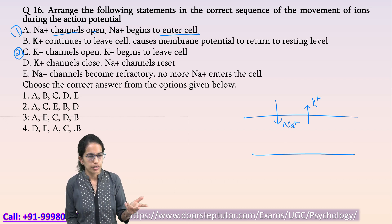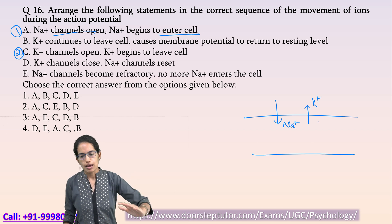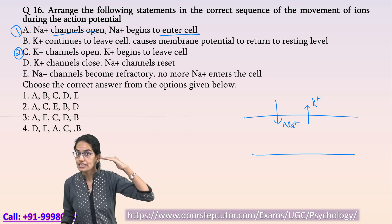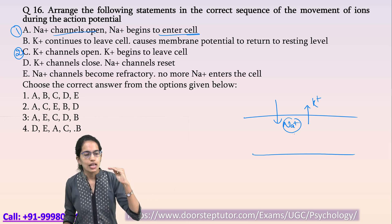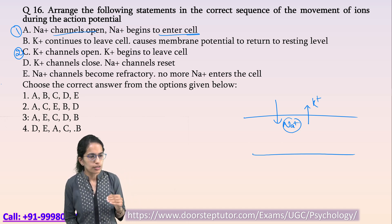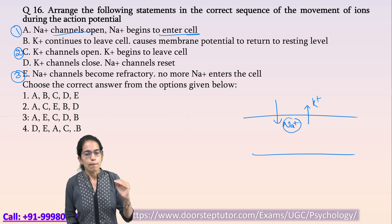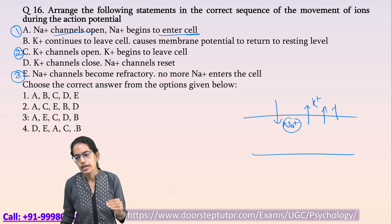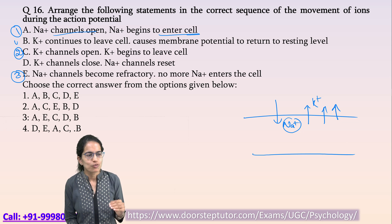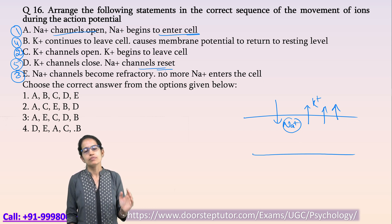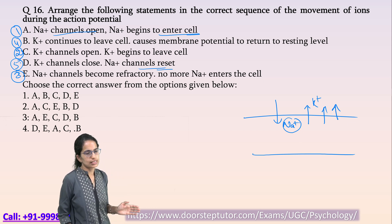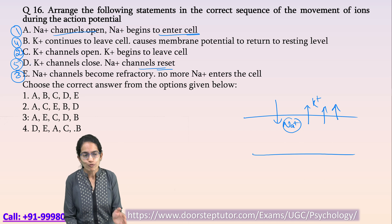After potassium begins to leave, there is a stage called the refractory period — meaning no more sodium is allowed to enter the cell, but potassium continues to leave. This is the next stage. Finally, the potassium channels close and the sodium channels reset, which is the final stage. This is the complete order of the sequence for the action potential.